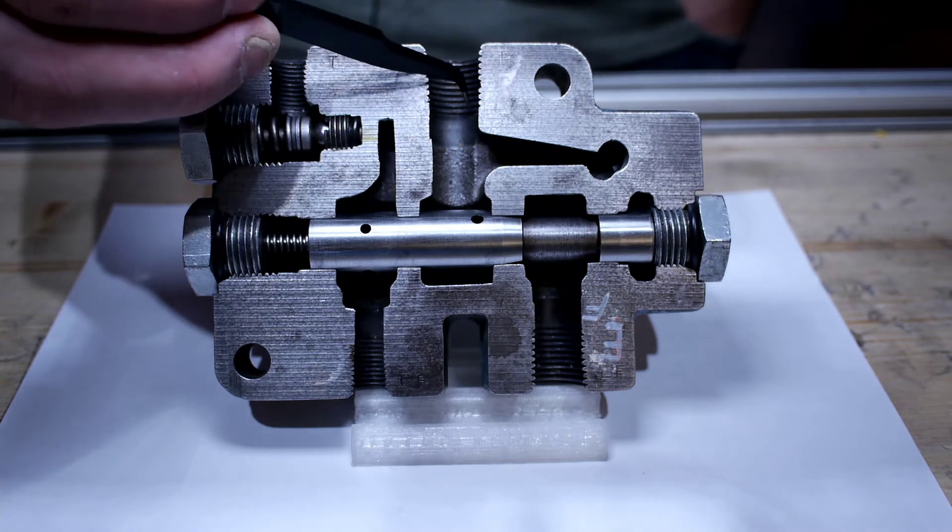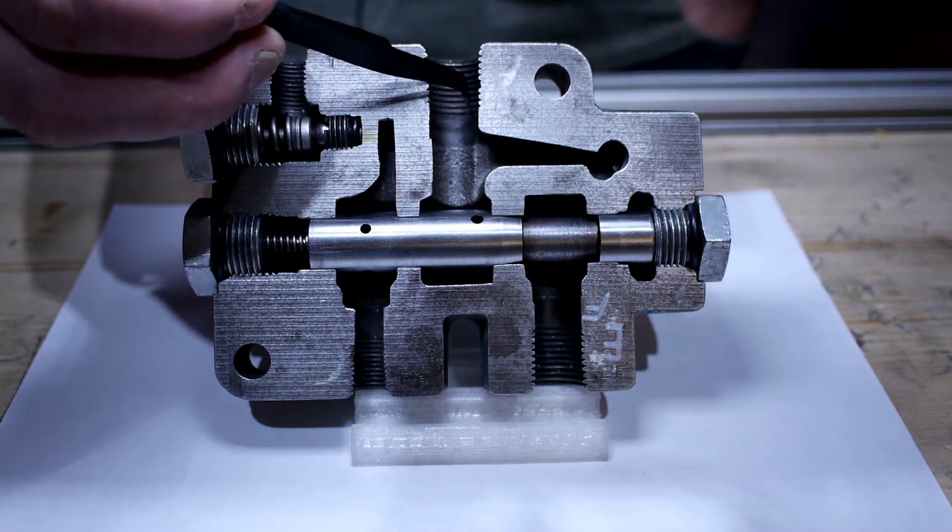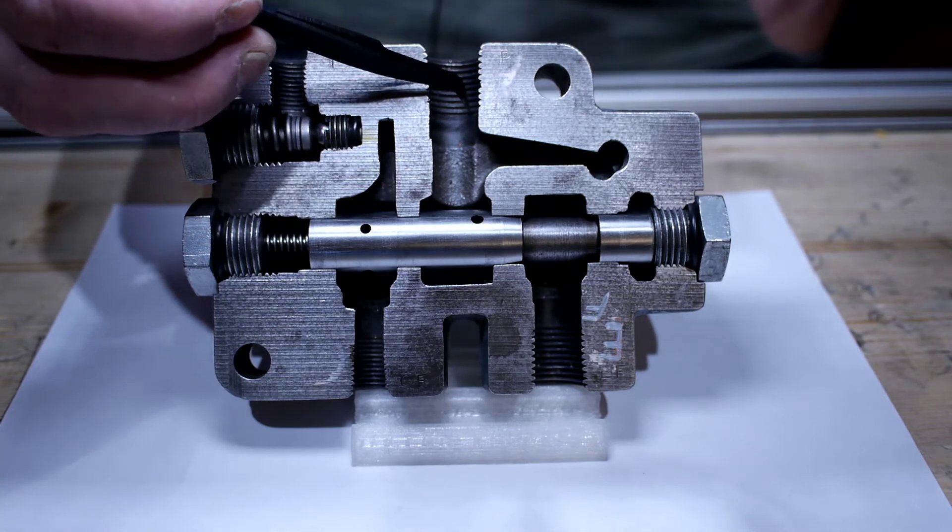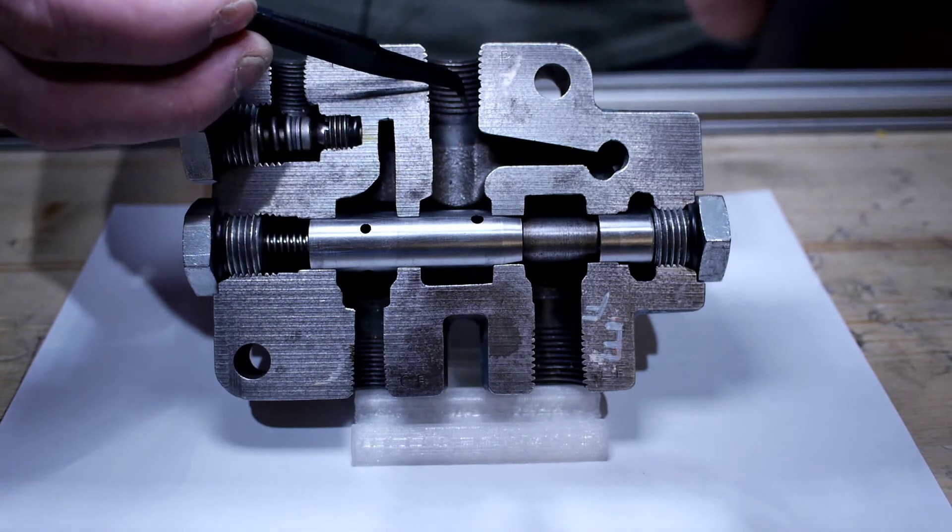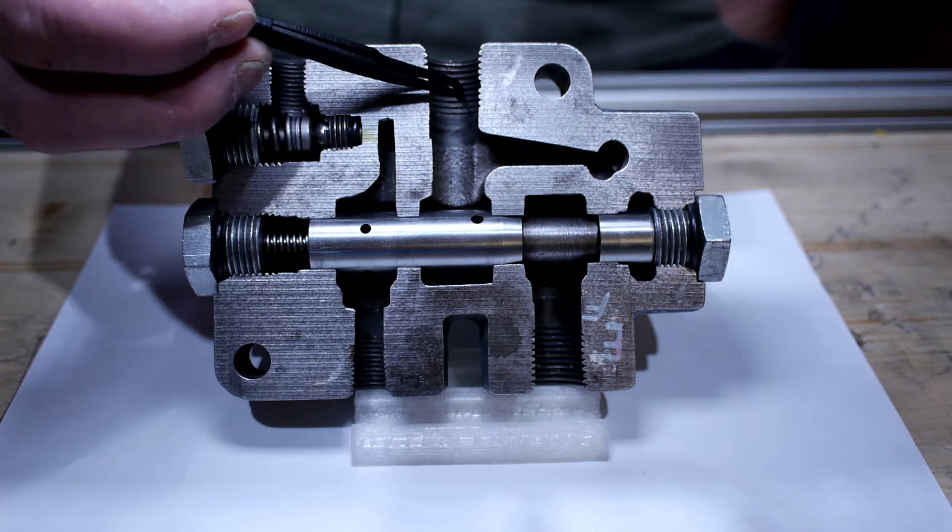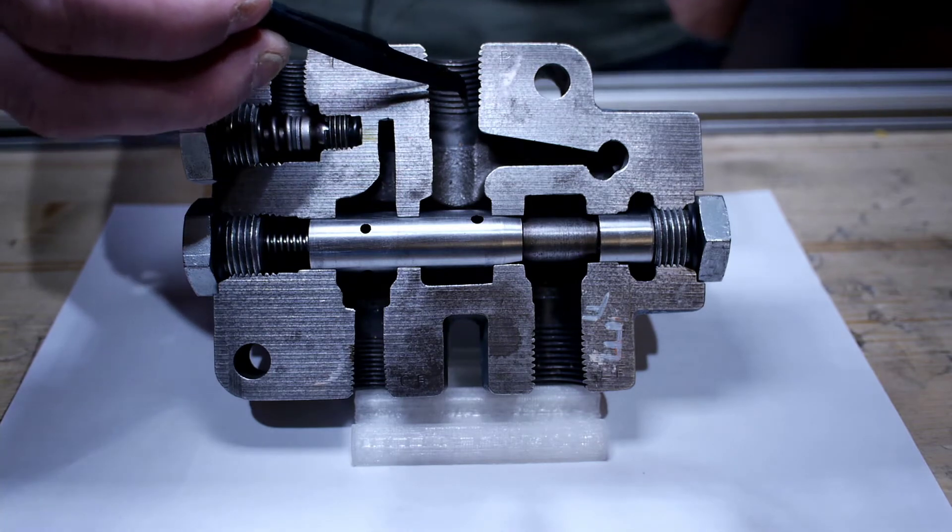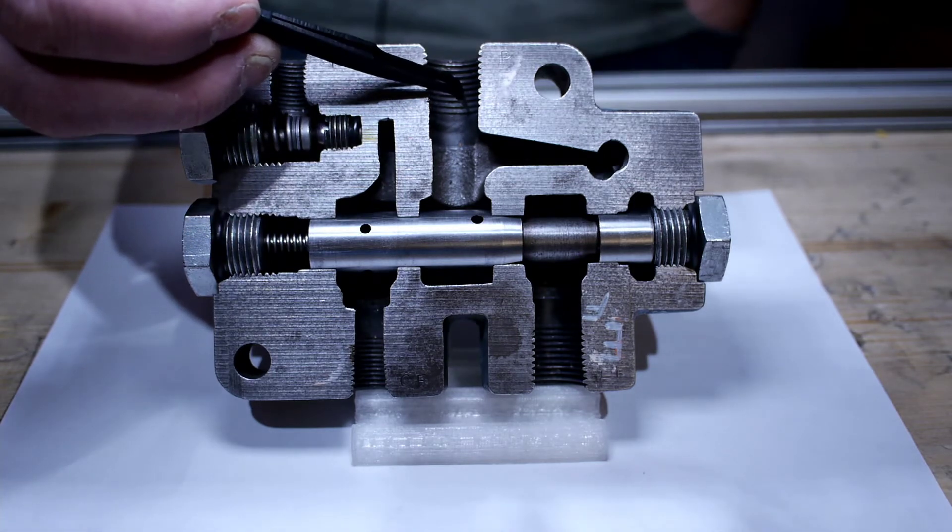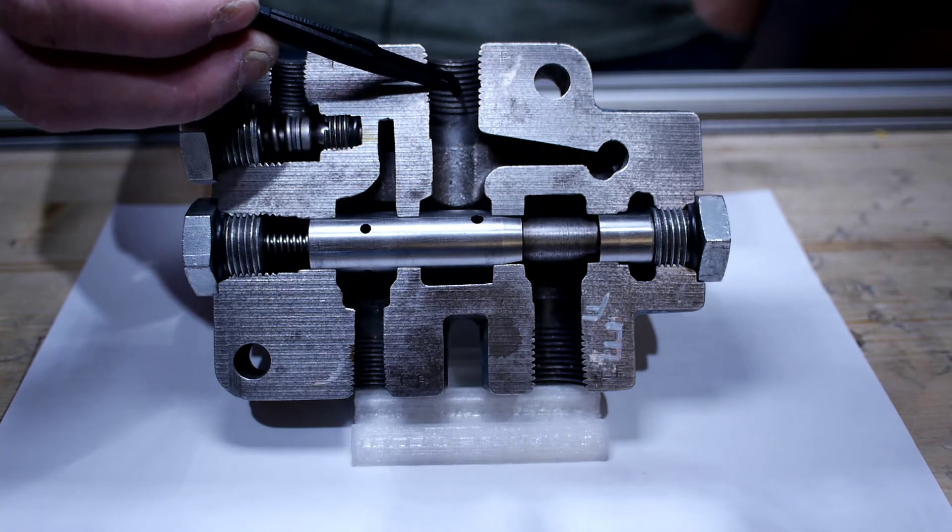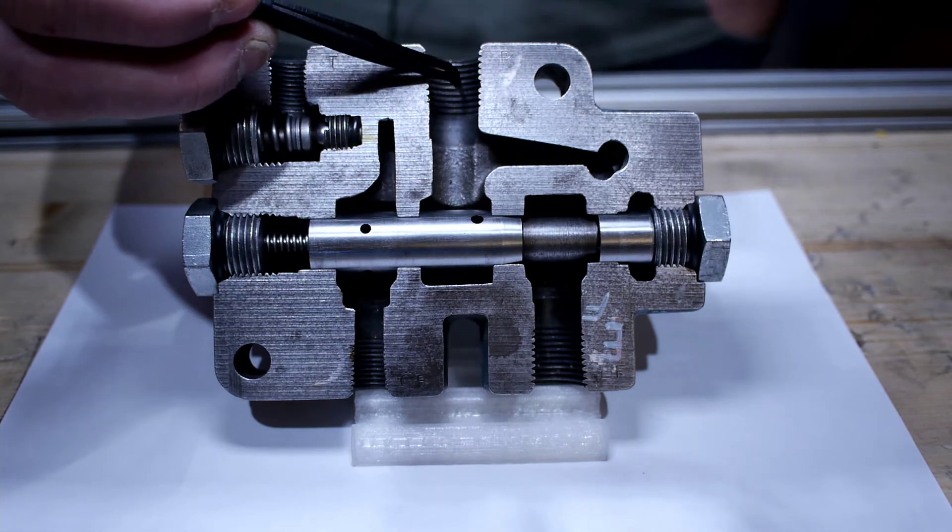If we were going to use a pressure compensated pump, we would have used a different style flow control here, probably would have used a restrictor style. This is typically going to be in a fixed displacement open center system. So what we need to do without sending the oil over relief is we need to send it somewhere else.